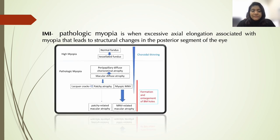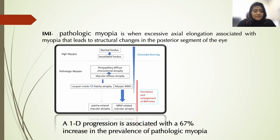High myopia is associated with choroidal thinning and tessellated fundus, but pathologic myopia is associated with chorioretinal atrophy, sometimes leading to neovascularization, formation and enlargement of Bruch's membrane holes, and also leading to macular atrophy. One diopter of progression is associated with a 67 percent increase in the prevalence of pathologic myopia.